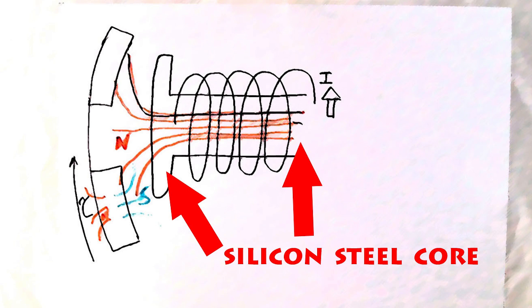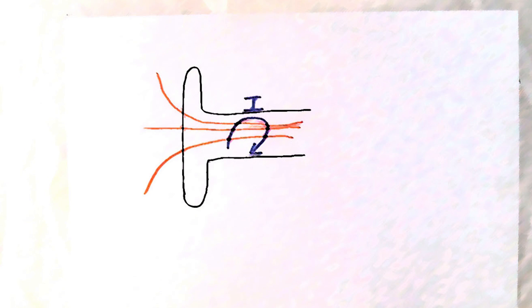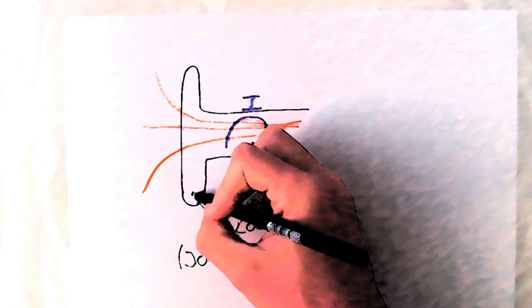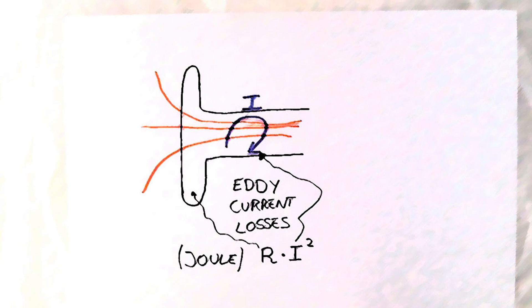The stator is made of silicon steel because it concentrates the magnetic field. But the opposite is also true. The magnetic field produces a current that wants to circulate inside the steel stator. This current will produce the so-called eddy current losses at the expense of the magnetic field.